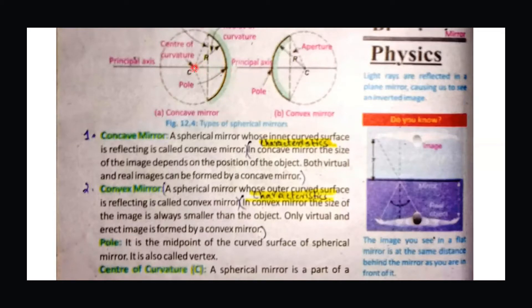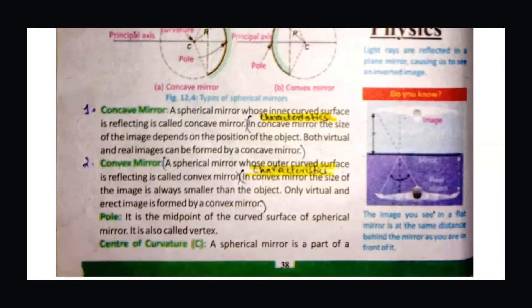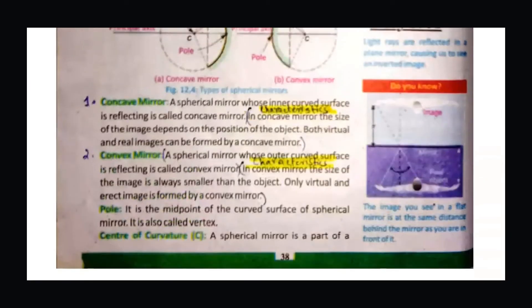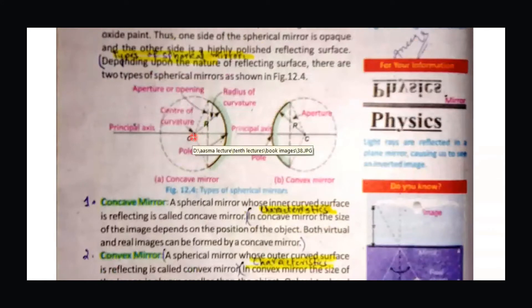The second term is the center of curvature, denoted by capital C. The center of curvature is the center of the sphere from which the mirror is a part. The pole is the central midpoint of the mirror's curved surface, while the center of curvature is the central point of the whole sphere.